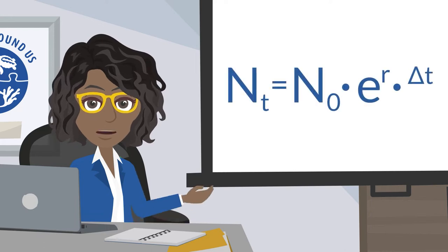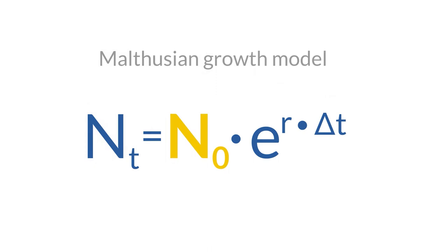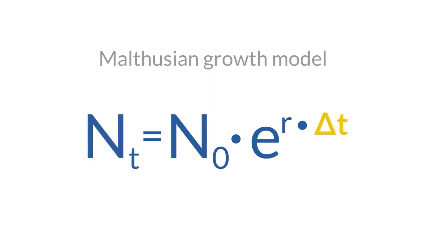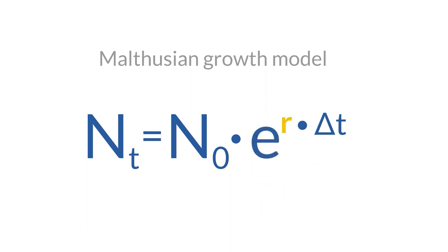nt equals n0 times e to the r multiplied by delta t. Where n0 is the initial number of individuals in the population at time t, nt is the population size after a time delta t, e is Euler's number 2.718, and r is the intrinsic rate of population increase.